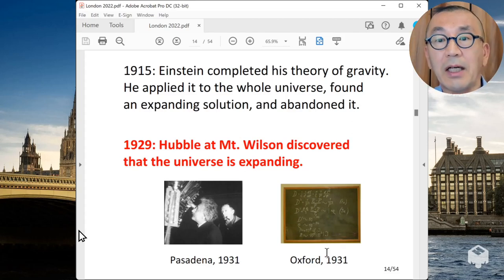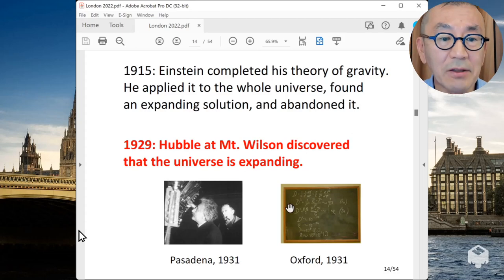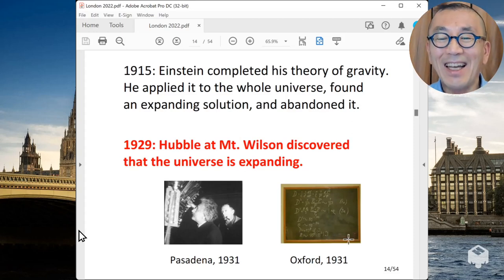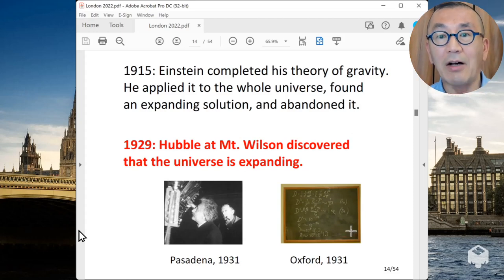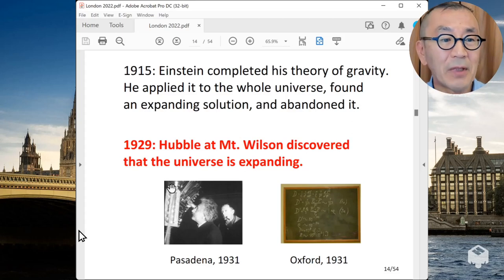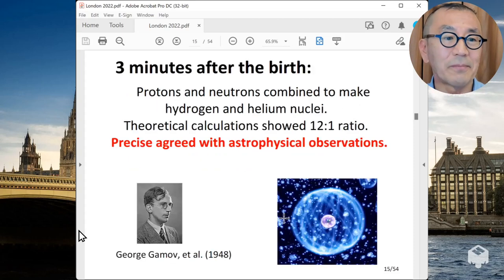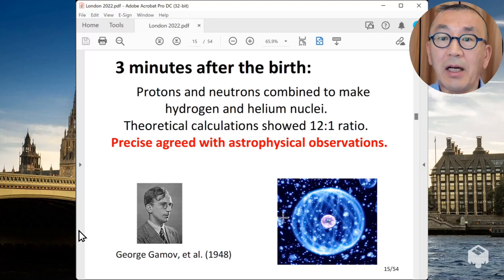And in the same year, Einstein actually gave a set of lectures in Oxford. And actually, Oxford University still preserved the blackboard that Einstein used on that occasion. And this is actually a photo I took when I visited Oxford University about 10 years ago to give a set of lectures at UK-Japan Winter School. And so if you look at this blackboard, you see that Einstein is actually explaining how the universe expands based on his equation. So in fact, he changed his mind after seeing the observation at Mount Wilson.